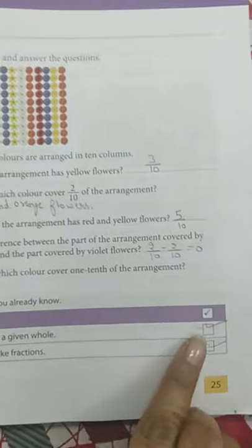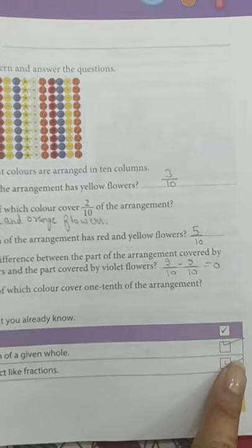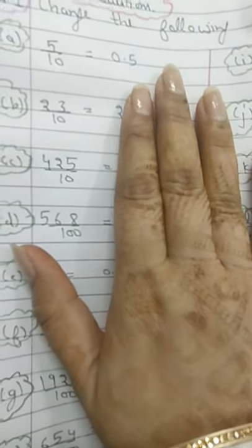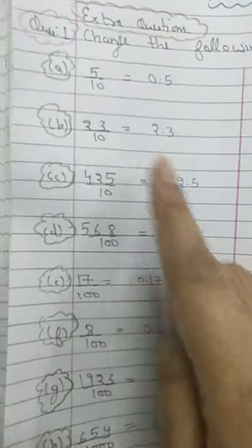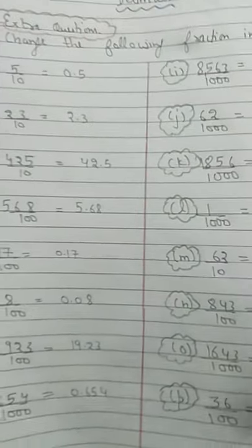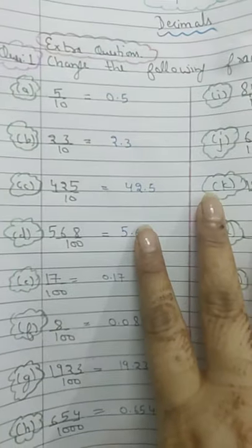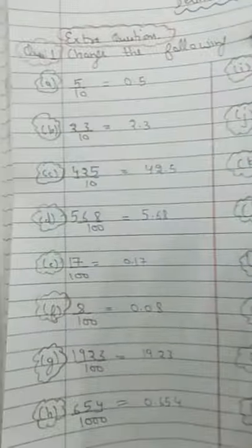Can you find the fraction of a given whole? Yes, we can. Can you add and subtract like fractions? Yes, we can — we did this in an earlier chapter. Now the next thing we discuss is how to change fractions into decimals. As you can see, the denominators are either 10, 100, 1000, 10,000, or 100,000.